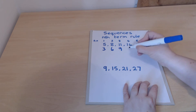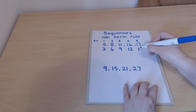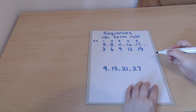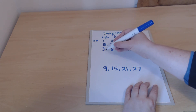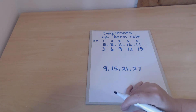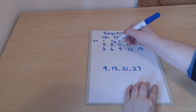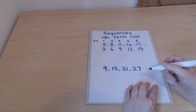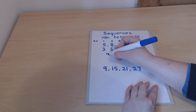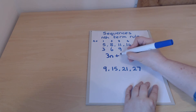I know it doesn't look like it at the moment, but I'm going to write the 3 times table underneath. What you'll notice is we've got our 3 times table, but in order to get the numbers above, each one has had 2 added to it. So 3 plus 2, 6 plus 2, 9 plus 2 and so on. And so the nth term rule for this one is 3n — because it's the 3 times table — plus 2.